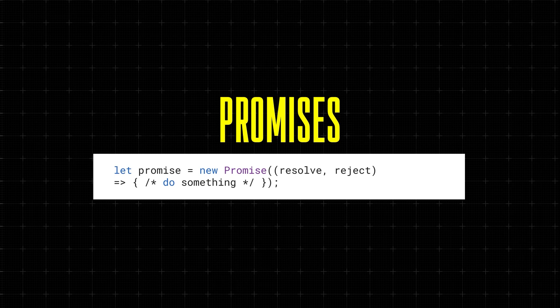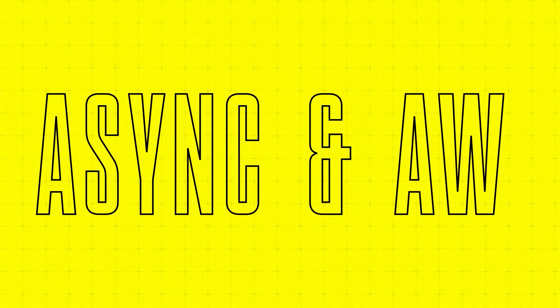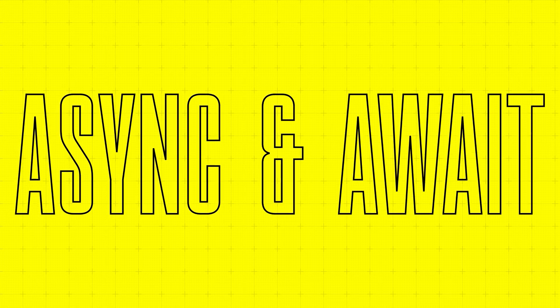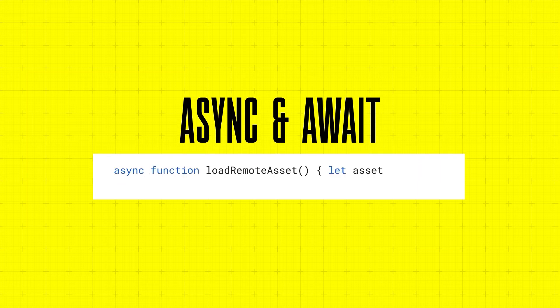Now, to pair with promises, ES6 introduced async and await. This new syntax simplifies working with promises. Here's a code snippet. In this example, the download asset function returns a promise, and await pauses the execution of the function until that promise resolves.